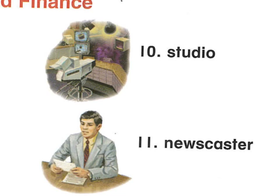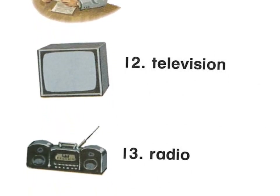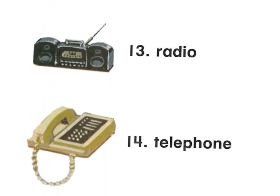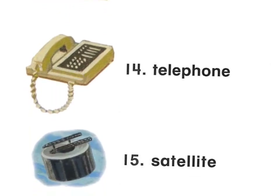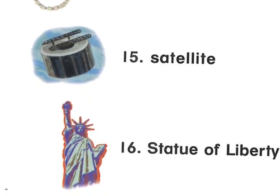The word is 'studio' — here you have what looks like a television studio or a news reporting studio. We have a newscaster — the person who gives the news on television. We also have radio, telephone, and satellite, which is how cell phones work and how much of our technology works: signals are sent up to satellites and back to the earth.